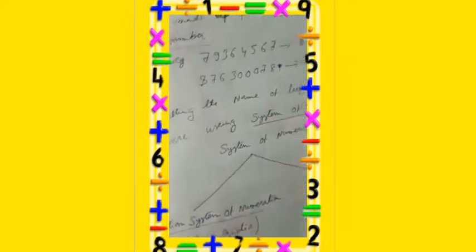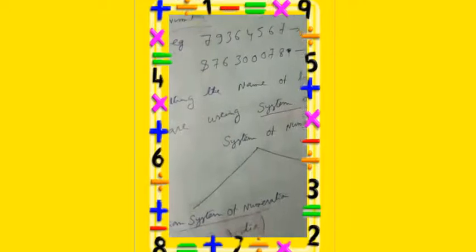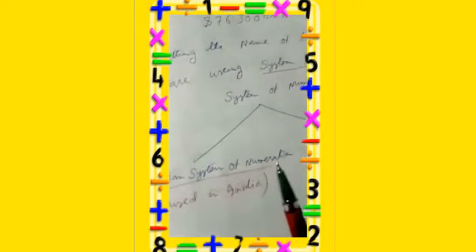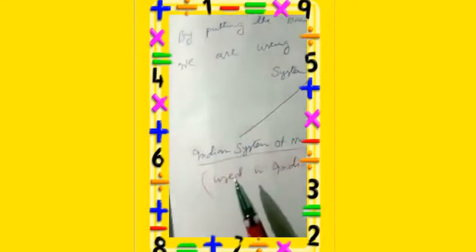There are two systems of numeration. One is the Indian system of numeration, also called the Indian place value chart, which is used in India. Another is the international system of numeration, also called the international place value chart, which is used outside India.